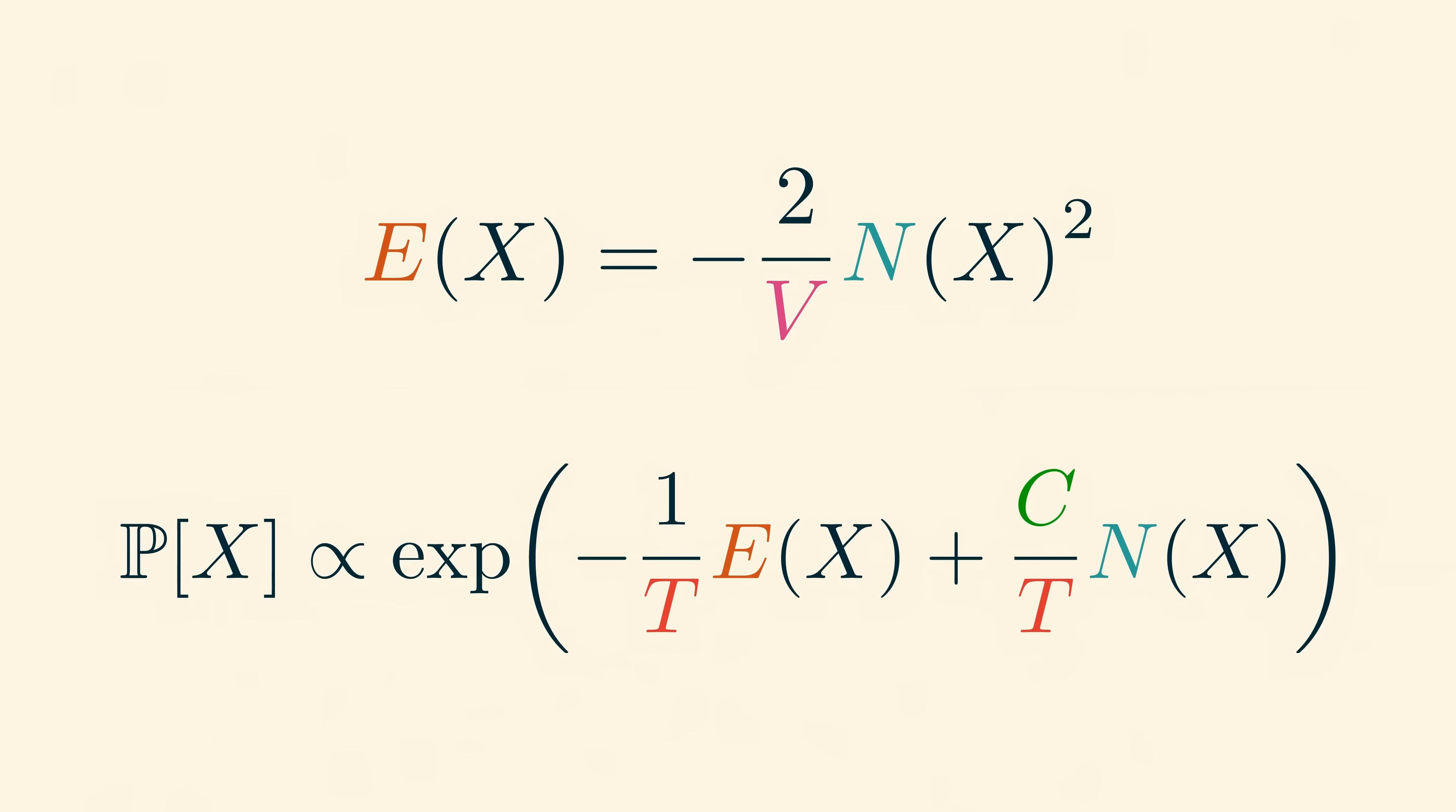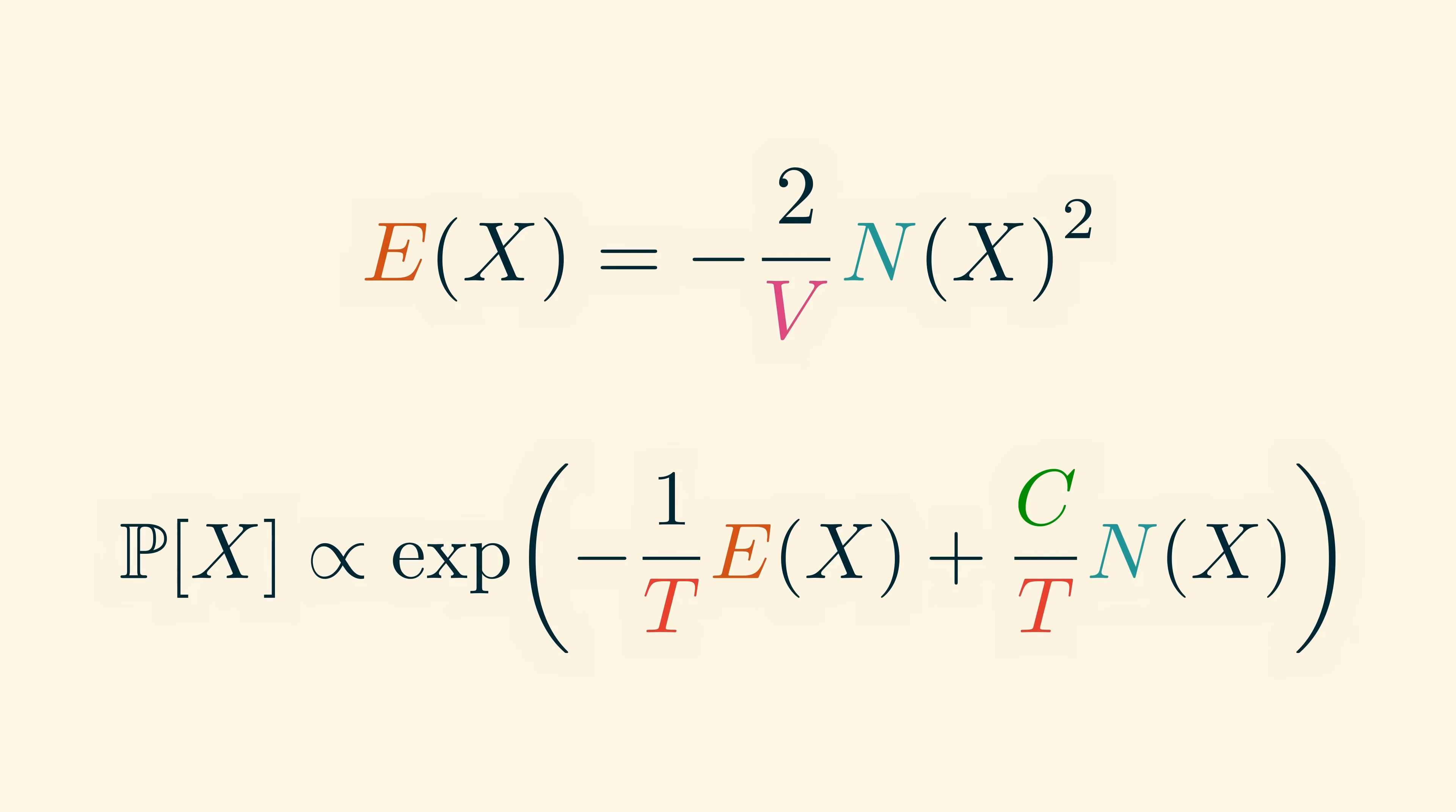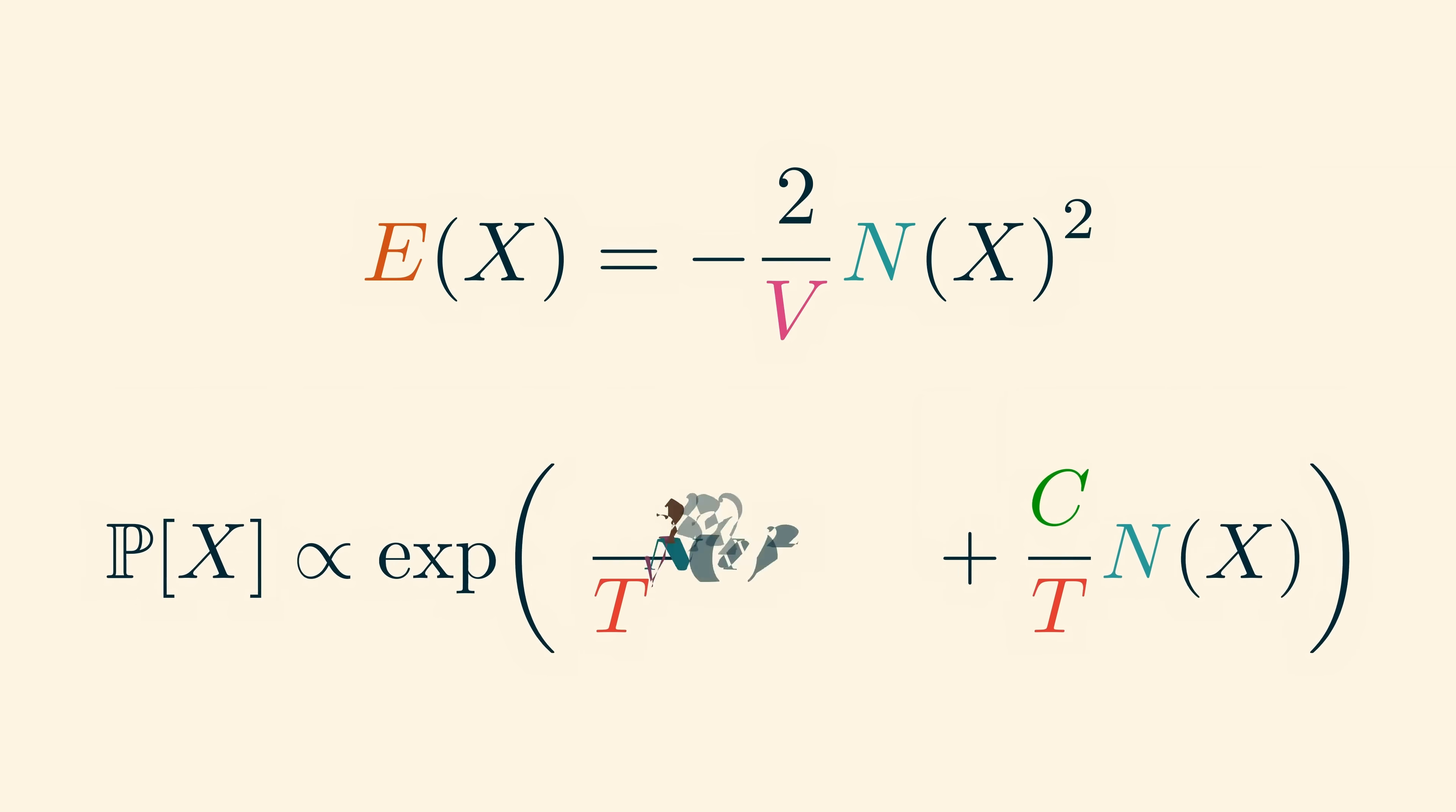Let's see what our Boltzmann distribution looks like now. Remember, the probability of a particular microstate x is proportional to the exponential of minus 1 over the temperature t times the energy e of x plus the chemical potential c over temperature times the number of molecules n of x. Now we can replace e of x by our new energy function and simplify, and we find that the new probability of x is proportional to the exponential of 2 over t v times n of x squared plus c over t times n of x.